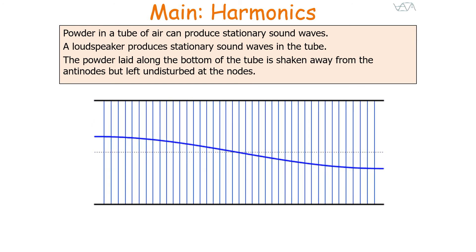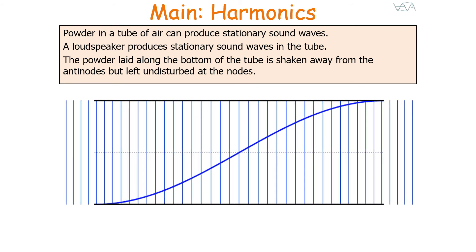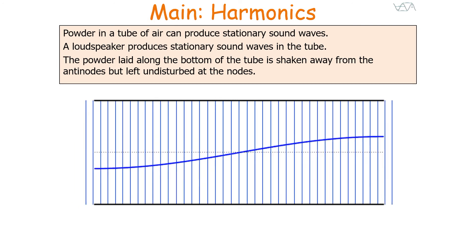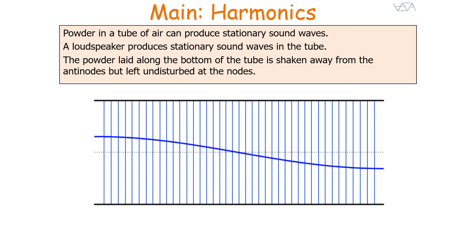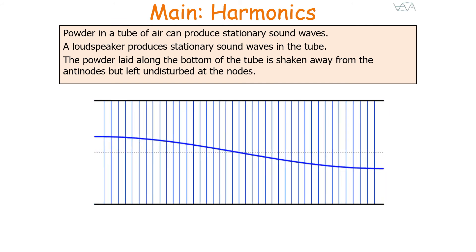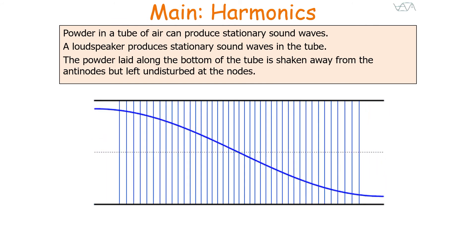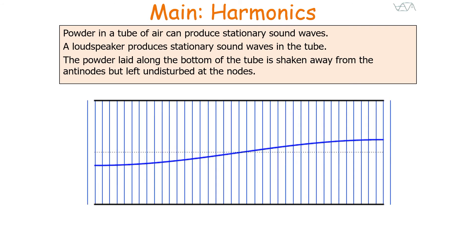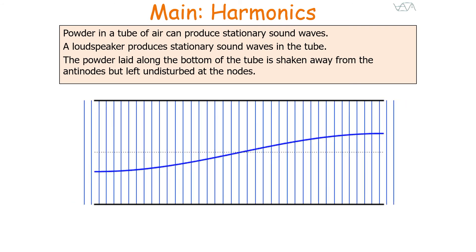Powder in a tube of air can produce stationary sound waves. A loudspeaker produces a progressive sound wave in a tube, which hits the end, reflects back, and the two progressive sound waves superimpose to produce a stationary sound wave. If you place powder in the tube, it will be shaken away from the anti-nodes but left undisturbed at the nodes.